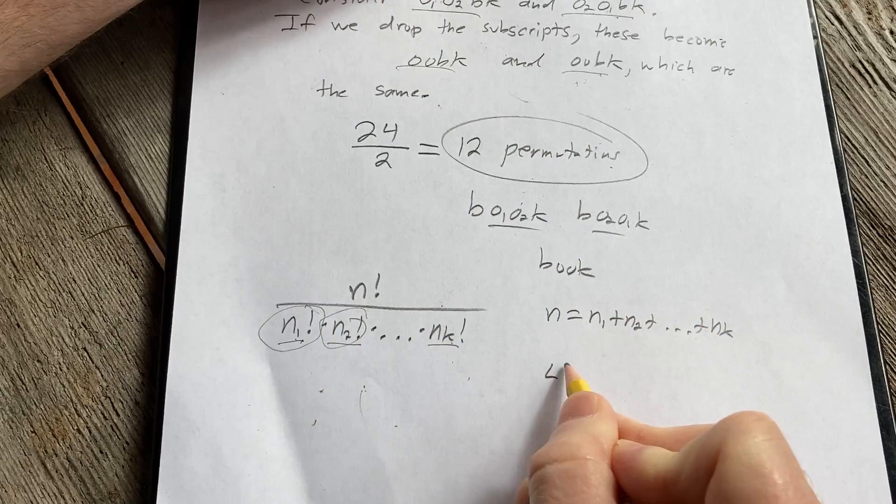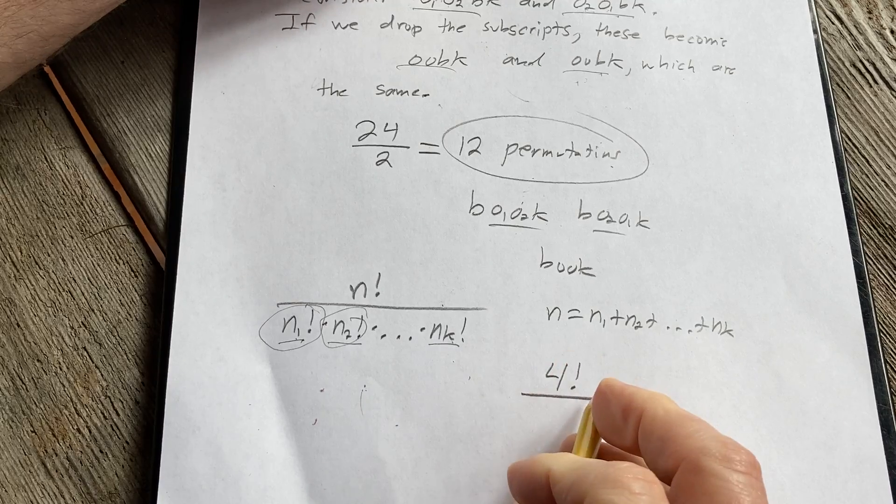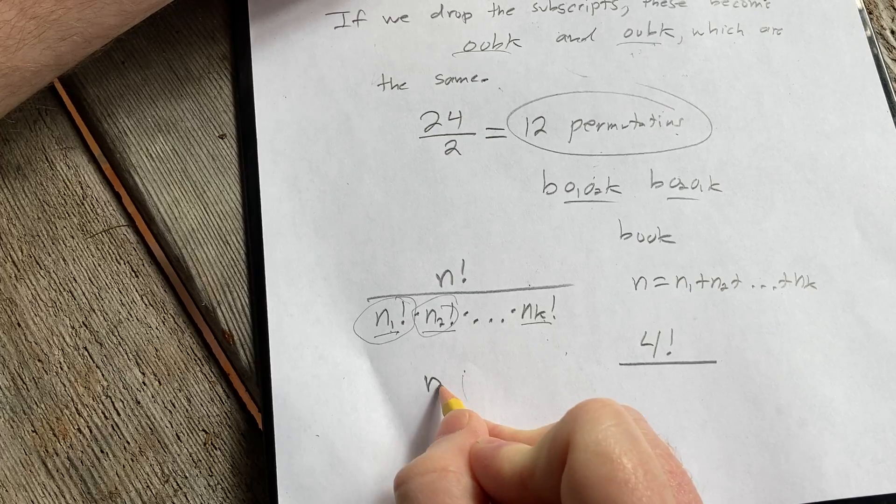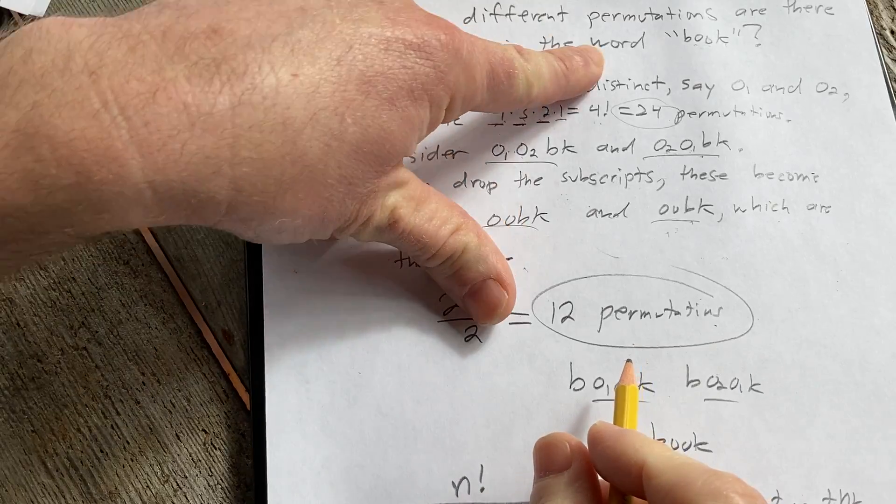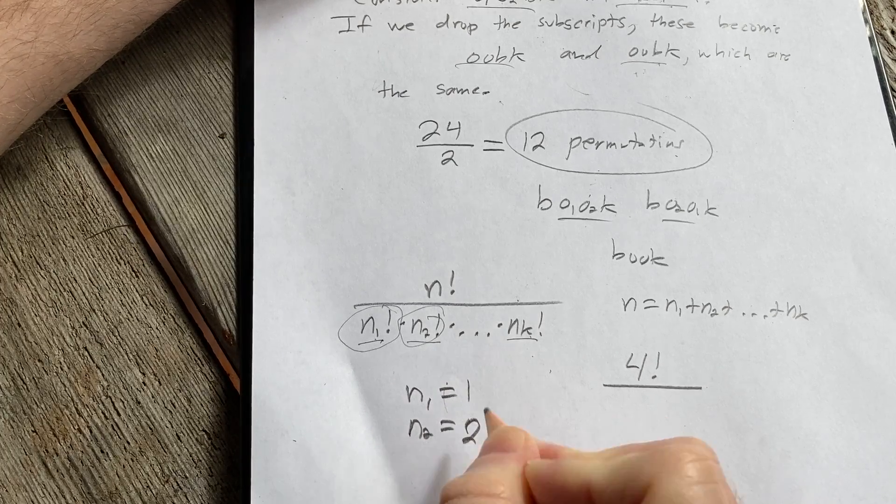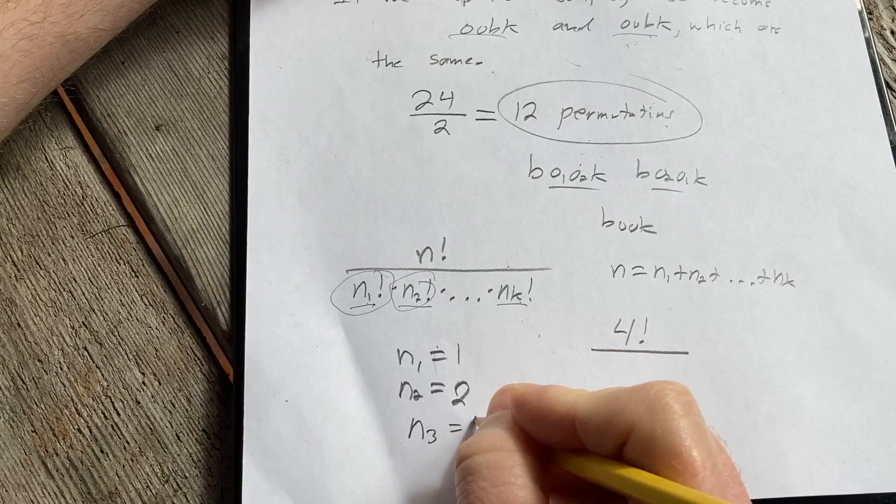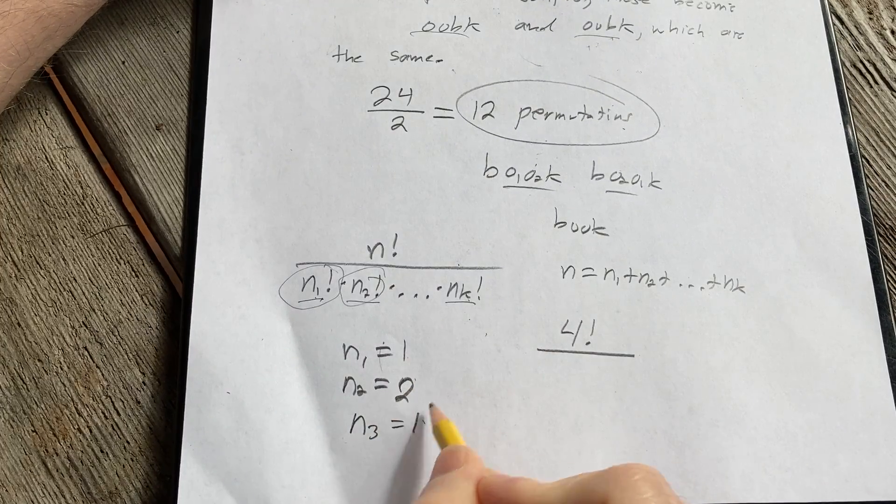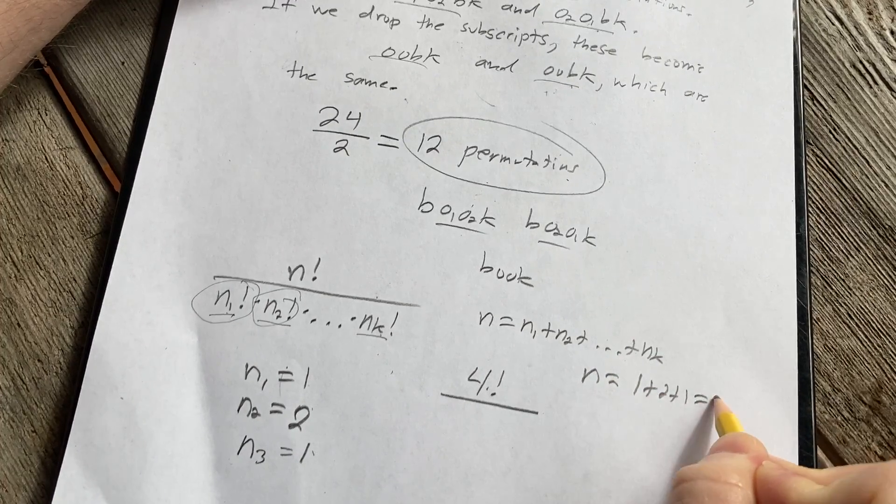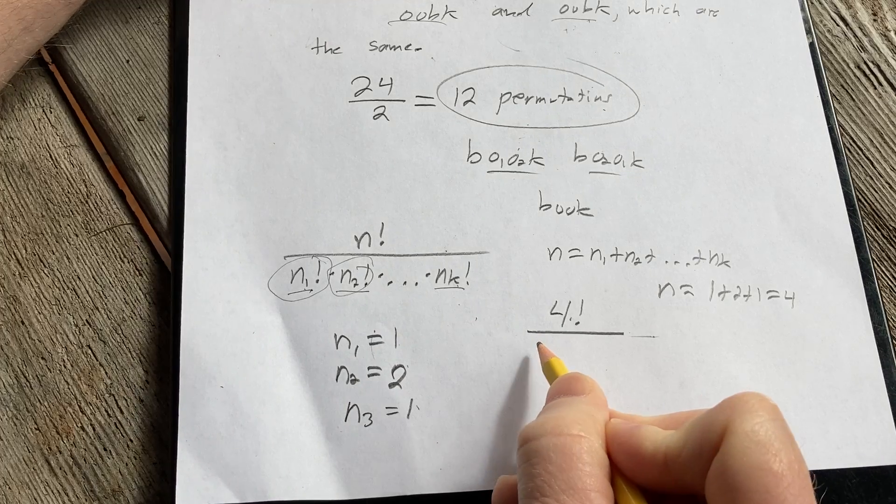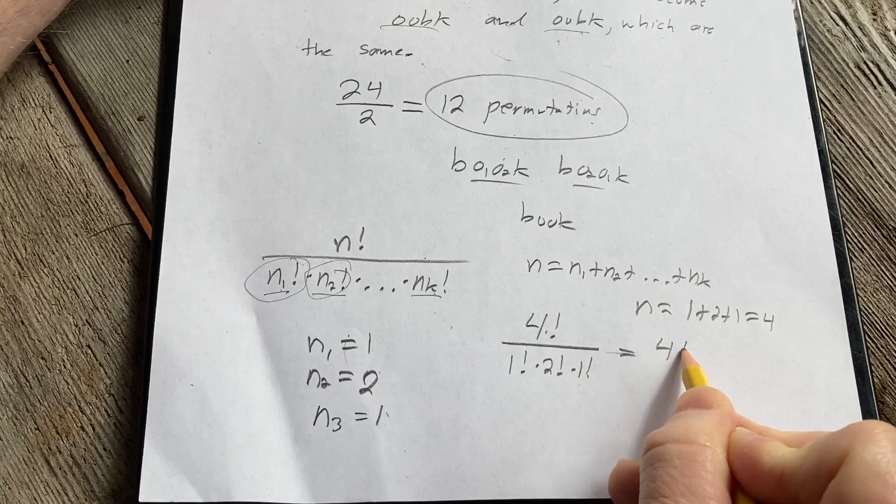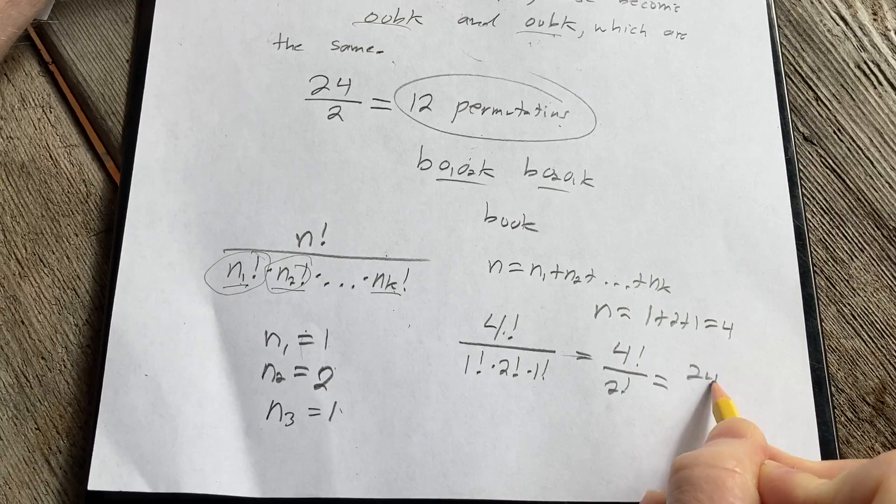So in our particular case, if we use this formula, it would be 4 factorial. And let's think about what the other ns are. For the word book, for the B, there's 1 B. There's 2 O's. And there is 1 K. So if you add these up, you get 4 factorial. So n is equal to 1 plus 2 plus 1, which is 4. That gives us the 4 factorial. And then it would be 1 factorial times 2 factorial times 1 factorial, which is 4 factorial over 2 factorial, which is 24 over 2, which is 12.